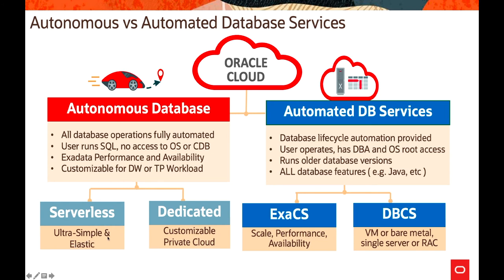Serverless is ultra-simple and elastic, while dedicated provides a customizable private cloud within the public cloud. For the automated database service, the database lifecycle has been automated; multiple users operate with DB access and operating system or root access. You can run older database versions like 11g, 12c, 18c, or 19c. All database features including Java are available on automated DB services. The two major offerings are Exadata-based services - Exadata Cloud Service or Exadata Cloud at Customer - which provide scalability and performance for mission-critical workloads, and Database Cloud Service on virtual machines or bare metal for smaller workloads.